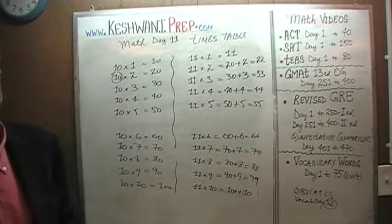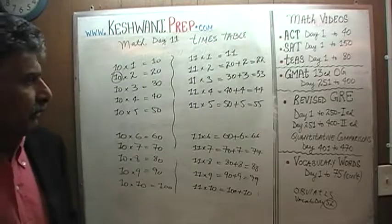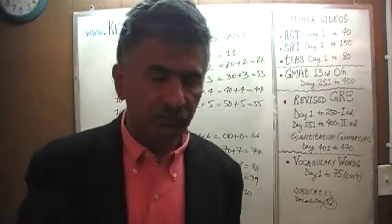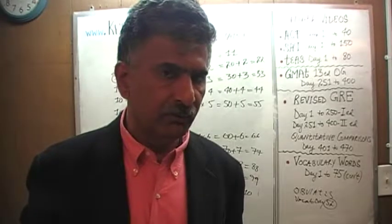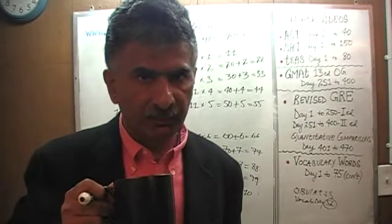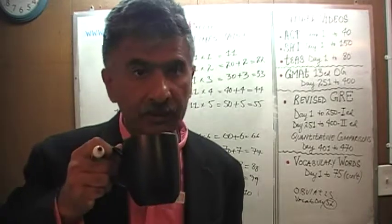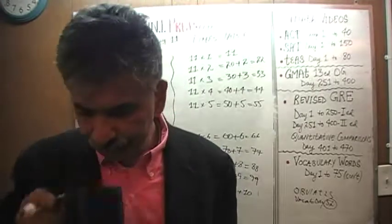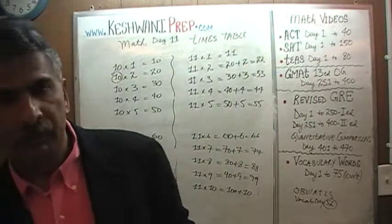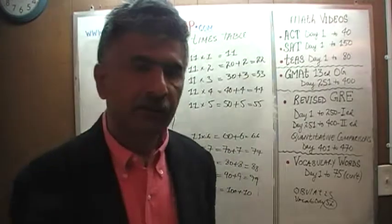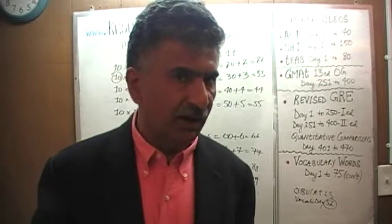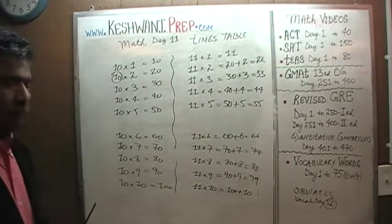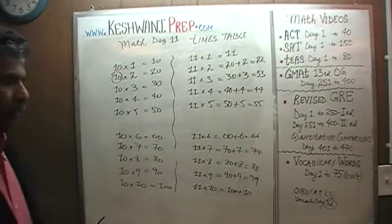We are going to play the exact same trick, make use of the same exact logic, same exact rationale, same exact thinking when we want to memorize the tables of 12 — which is the last table we are going to do here. So let's do 12 now. We are done with 11 and we are going to move on to the table of 12.